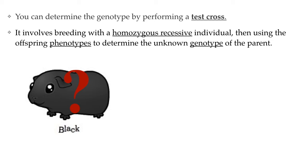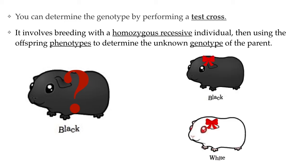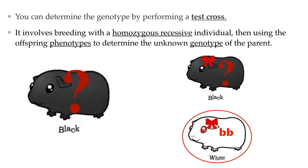Let's say you take Bob to the pet store to find a mate. At the pet store, you find that there are only two female guinea pigs for sale: one with black fur and one with white fur. Which one should you pick as Bob's mate? If you pick the white guinea pig, you are thinking like a scientist, because in a test cross, the organism with the dominant phenotype is crossed with an organism that displays the recessive phenotype and is therefore homozygous recessive. The white guinea pig has to be homozygous recessive — it is the only way for her to be white. The black guinea pig has an unknown genotype, just like Bob, and would not be a good choice for a test cross.